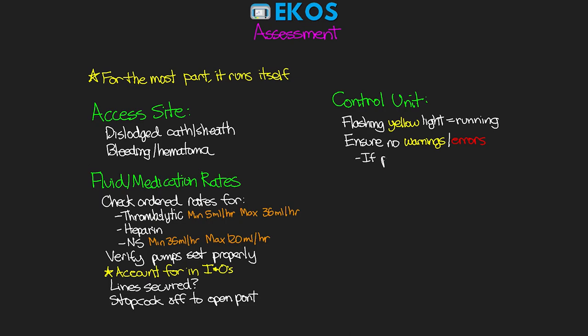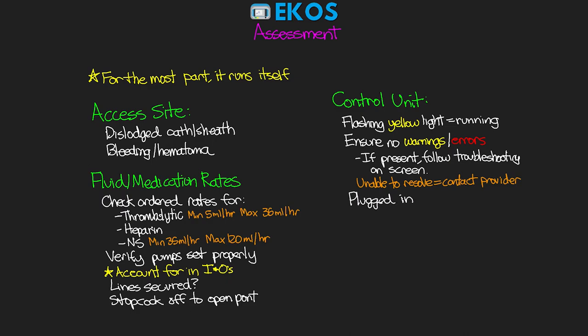On the newer unit, the screen displays whether it's running or stopped. Make sure there are no warnings — which show yellow — or errors — which show red — on the screen. If present, follow the troubleshooting guide on the screen; it will walk you through what to look for and what to do to get therapy running again. Once things are corrected, it will display 'ready to start' and the machine does not restart automatically — you will have to restart it manually. If a warning or error cannot be resolved, contact the provider immediately. Also make sure the control unit is plugged in when you're not traveling with it — the battery time on the older unit is about 60 minutes, really just meant for traveling to a CT, and the patient cannot go for an MRI with this catheter in place.